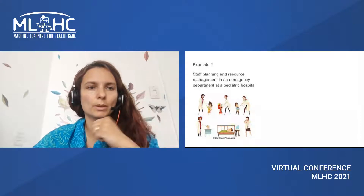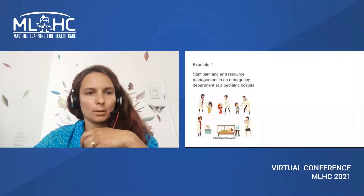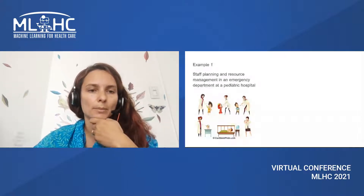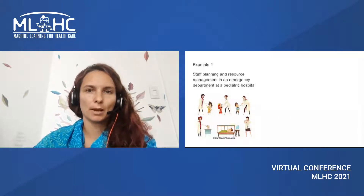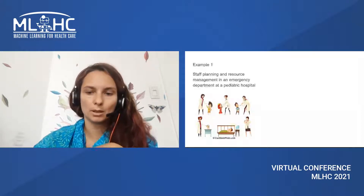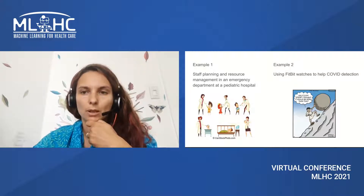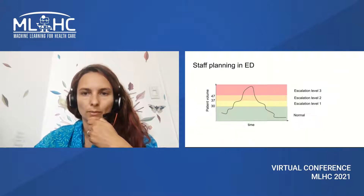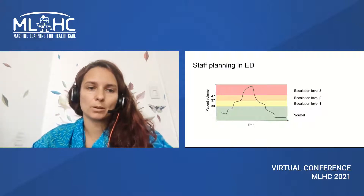My first example — I'll give two examples in this talk. The first is the planning of staff and resource management in an emergency department at SickKids, the pediatric hospital where I'm based. The goal is to ensure enough staff and appropriate care for patients given patient volume. The second example, which is quite different, is using Fitbit watches to help with COVID detection. Staff planning in the emergency department greatly depends on patient volume — this is the key contributor to decision-making.